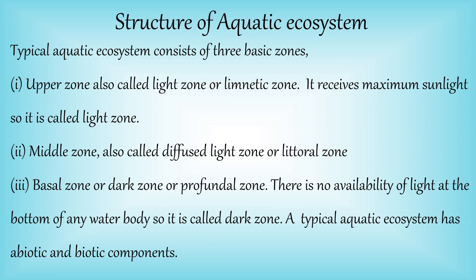If we study the structure of the aquatic ecosystem, a typical aquatic ecosystem consists of three basic zones: upper zone, middle zone, and basal zone. The upper zone is also called the light zone or limnetic zone because it receives maximum sunlight or solar radiations — that is why it is called the light zone.